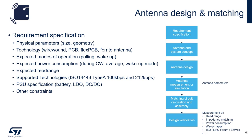Antenna design and matching is typically where hardware engineers spend about 90% of their time during a design cycle. It starts with a requirement specification that specifies things like the physical parameters of the antenna — the size and geometry, the technology, which is basically what the antenna will be made of, the expected modes of operation, whether it'll be polling continuously or in a low power wake-up state, the expected power consumption, and the expected read range. Normally these are the two trade-offs when designing an NFC system: power consumption versus read range.